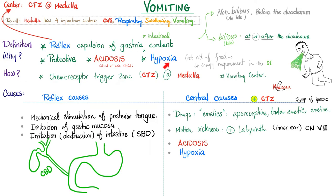Moreover, if I have hypoxia and there is less oxygen in the blood — probably less oxygen going to the brain and to the heart — do you think I have time to spend oxygen on the gut? No. So hypoxia will cause you to vomit the food content so that you're not busy digesting and absorbing food, which costs energy and oxygen, forgetting the vital organs such as the brain and the heart.